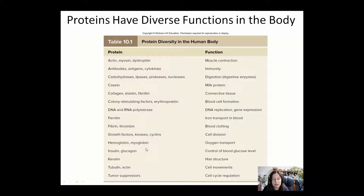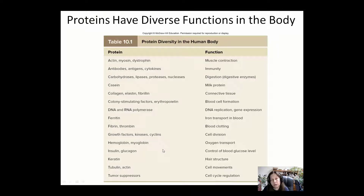Hemoglobin is important for oxygen transport. We will talk about a number of genetic diseases, including beta and alpha-thalassemia and sickle cell anemia, where there is a mutation in the hemoglobin gene, and you will see the effect that it has on the human organism and well-being.